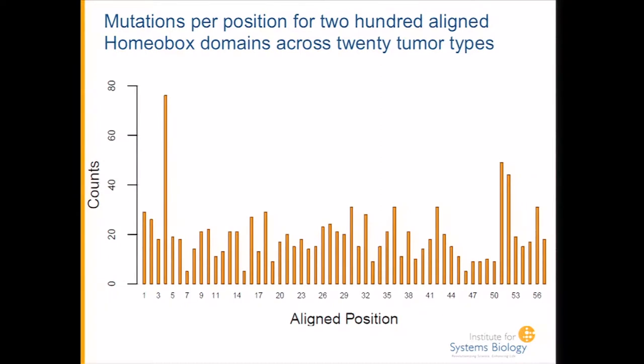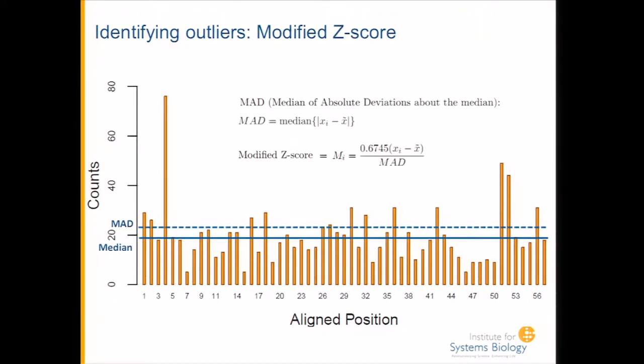Here's an example of the data you get from aligning several hundred homeobox domains across 20 different tumor types. Qualitatively, we can already see a number of points of interest. The way we quantify this is by calculating a modified z-score — identifying the median and the median absolute deviation, then for every point calculating its deviation from the median and comparing that to the median of absolute deviations about the median.